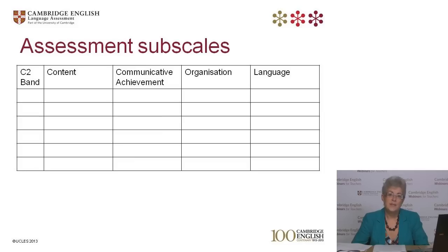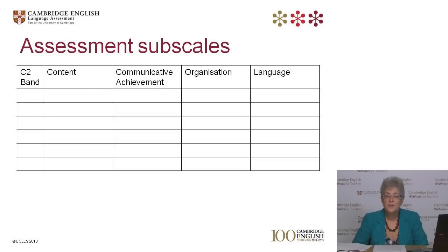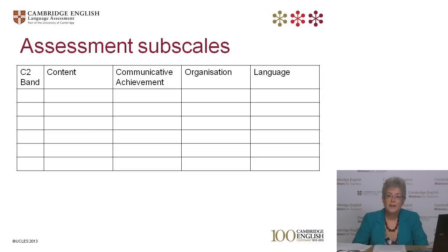There are four assessment sub-scales for Cambridge English General and Business English writing tests: Content, Communicative Achievement, Organisation, and Language. Content focuses on how well the candidate has fulfilled the task. Communicative Achievement focuses on how appropriate the writing is for the task and whether the candidate used the appropriate register. Organisation focuses on how the candidate structures the piece of writing — for example, if it's logical and well-ordered. The Language sub-scale covers vocabulary and grammar, including the range and accuracy of language used.